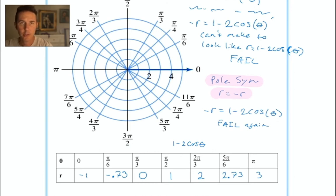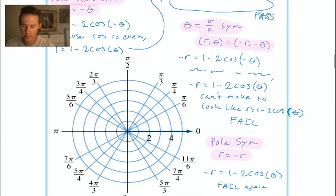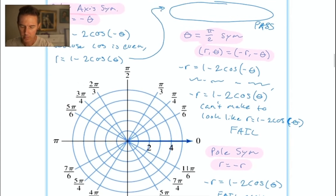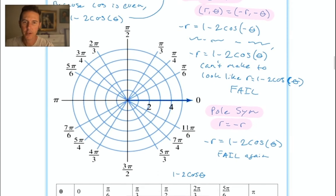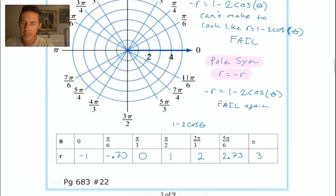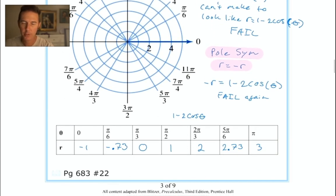Remember that when you pass a symmetry test, the graph will definitely exhibit that symmetry. This graph will definitely have polar axis symmetry. It may or may not have θ = π/2 symmetry or pole symmetry - because those tests failed, we didn't learn anything. It still may or may not exhibit those symmetries.